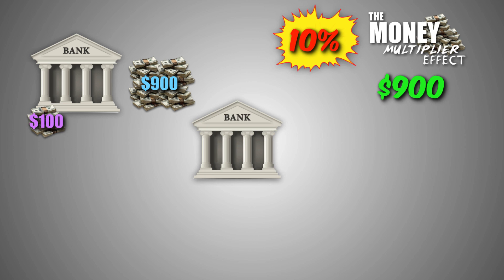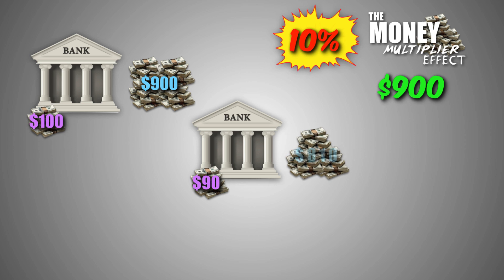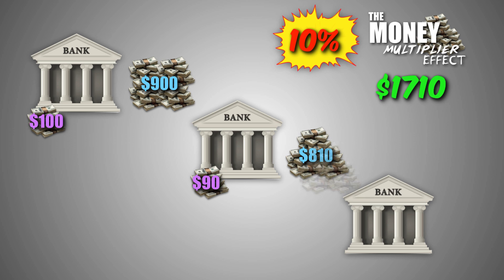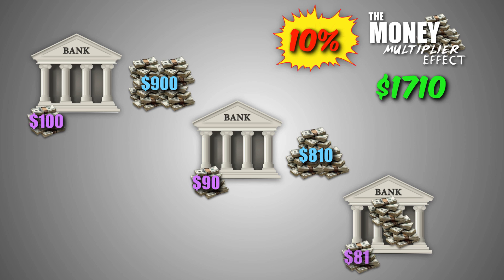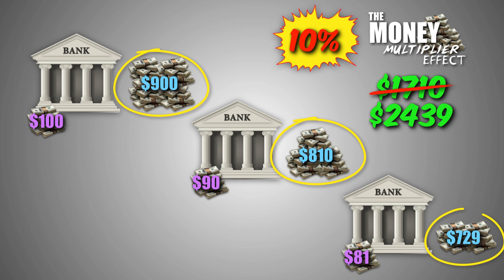When the $900 of new loans are eventually redeposited back into a bank, the bank will hold 10% or $90 of the $900 demand deposit in required reserves, and it will lend out the remaining $810 of excess reserves in the form of loanable funds. At this point, $1,710 of new money has been created in the economy from the initial $1,000 deposit. When the $810 of new loans are eventually redeposited back into a bank, the bank will hold 10% or $81 of the $810 demand deposit in required reserves, and it will lend out the remaining $729 of excess reserves. At this point, $2,439 of new money has been created.